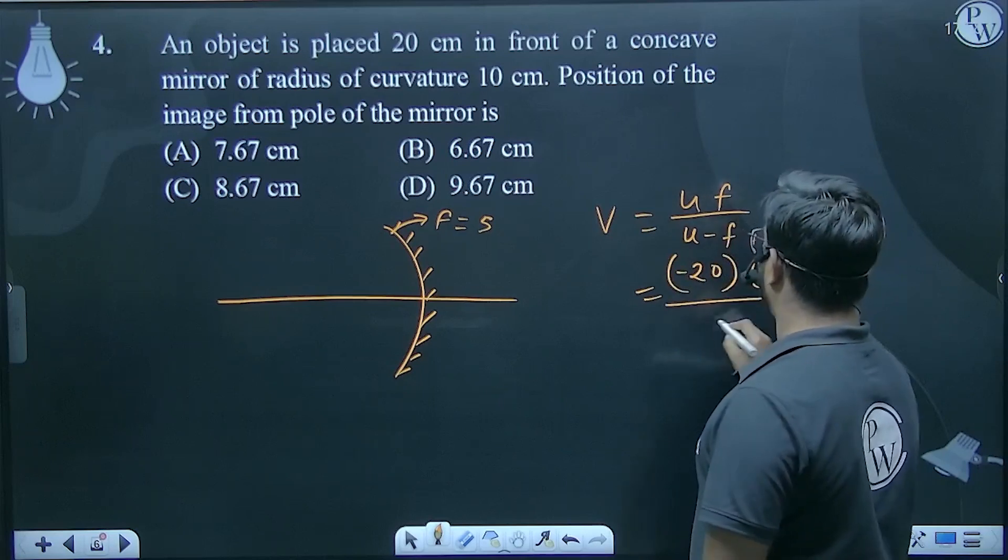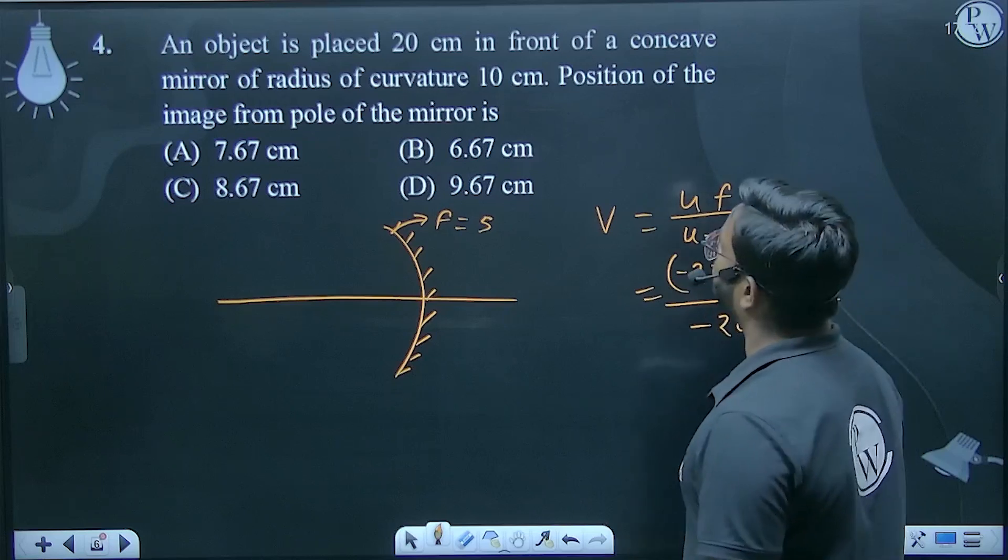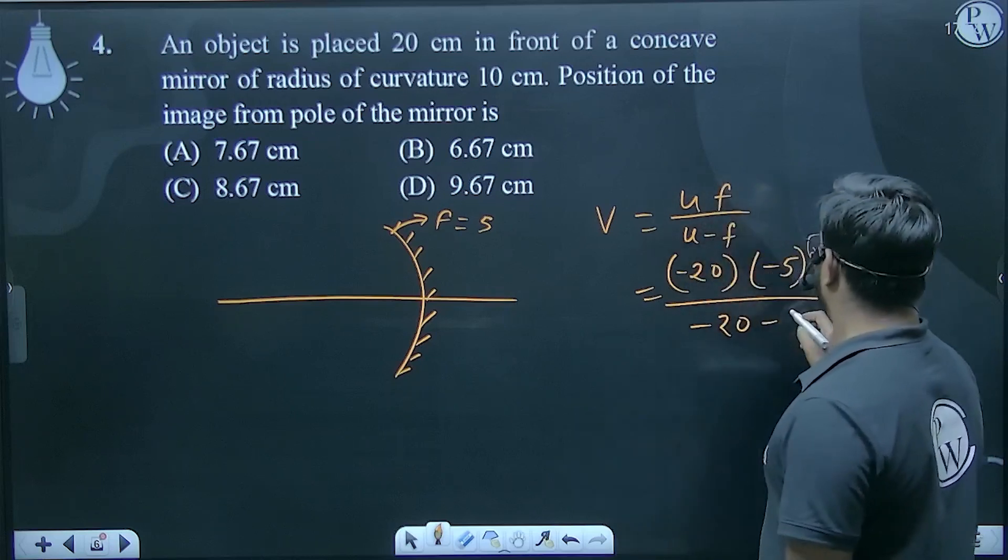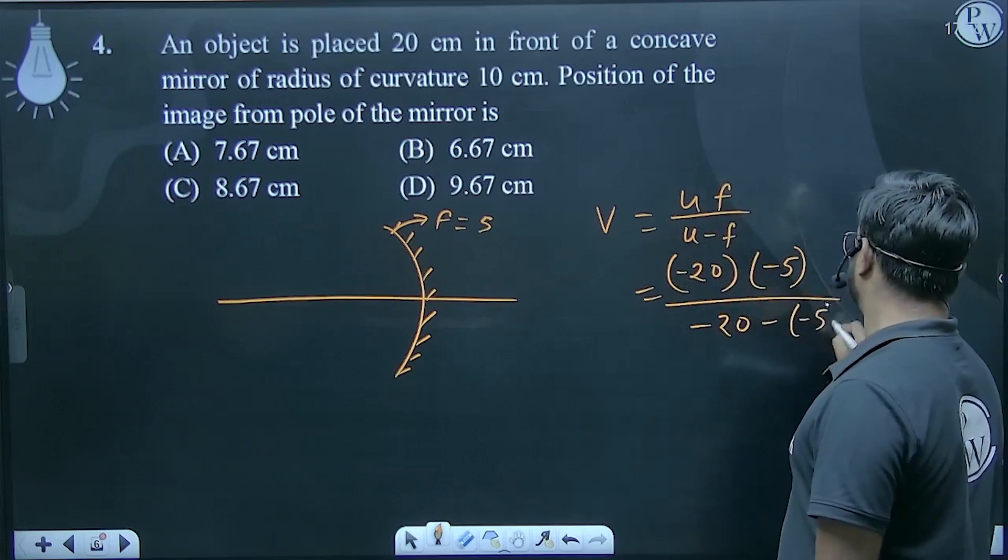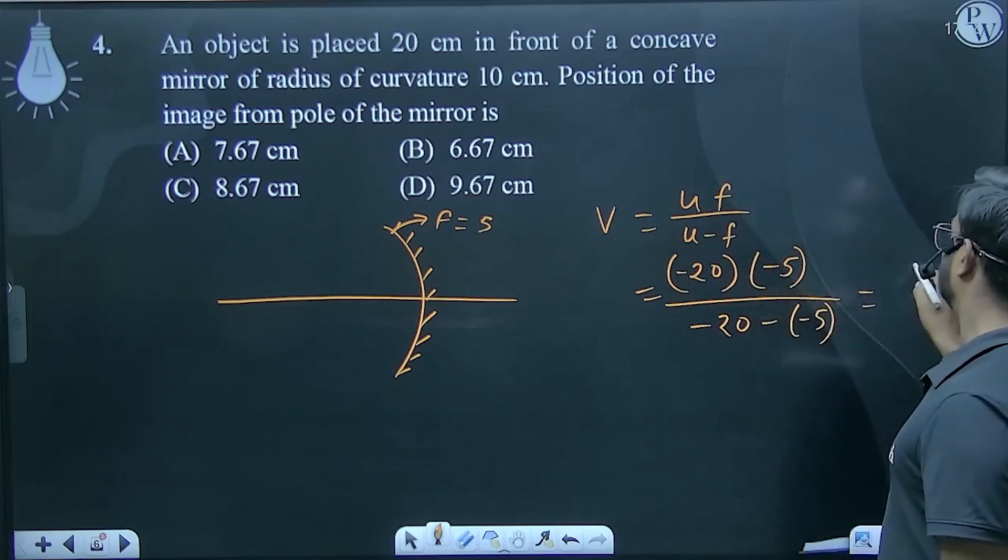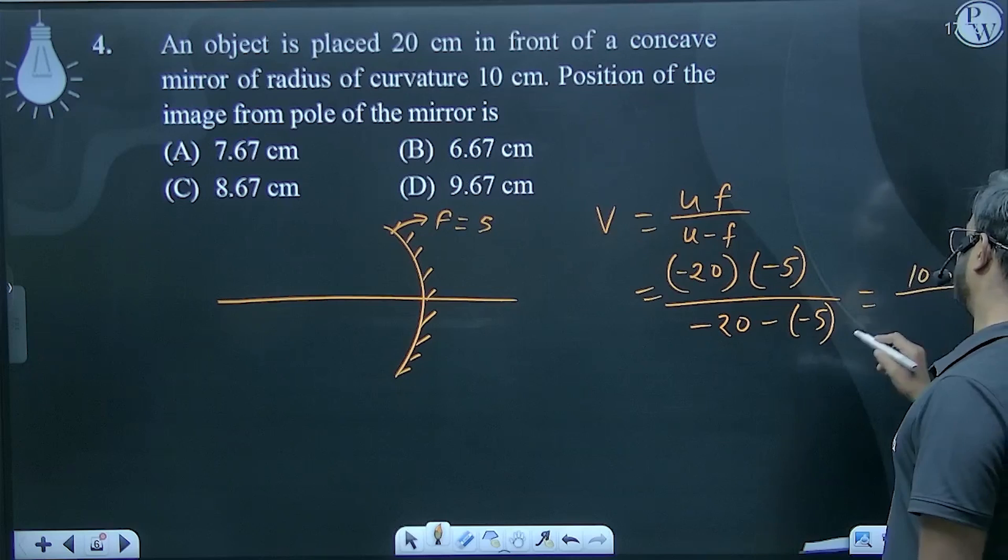U is minus 20, F is minus 5. And this is 100 divided by minus 15.